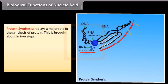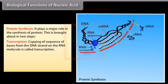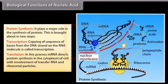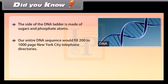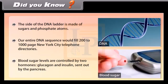Protein synthesis plays a major role and is brought about in two steps. Transcription is the copying of a sequence of bases from the DNA strand onto the RNA molecule. Translation is the process in which mRNA directs protein synthesis in the cytoplasm of the cell with the involvement of transfer RNA and ribosomal particles. The sides of the DNA ladder are made of sugars and phosphate atoms. Our entire DNA sequence would fill 200 to 1,000 pages of a New York City telephone directory. Blood sugar levels are controlled by two hormones — glucagon and insulin — sent out by the pancreas.